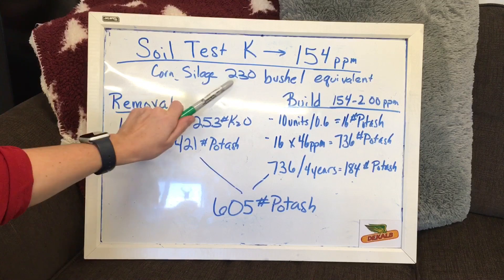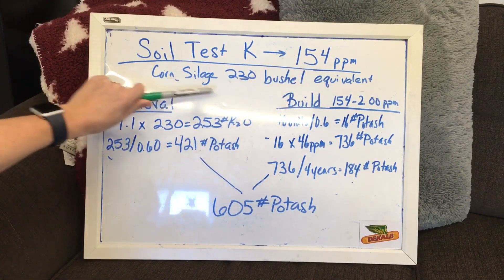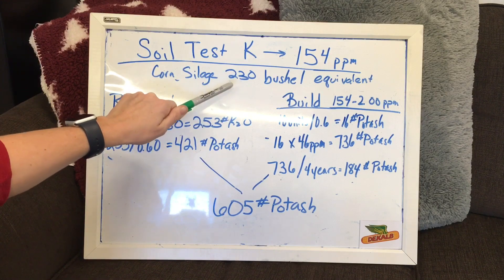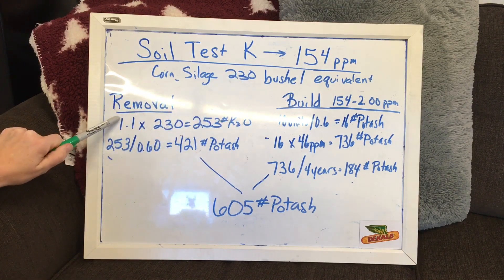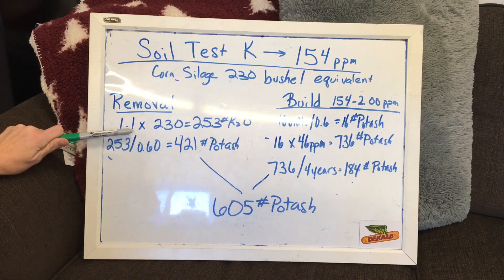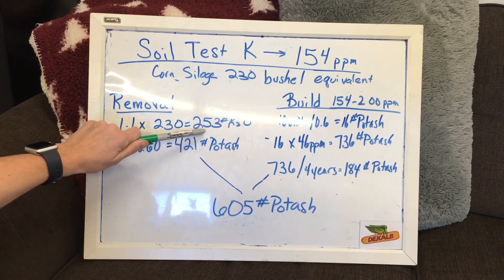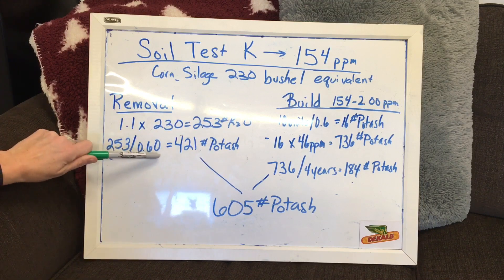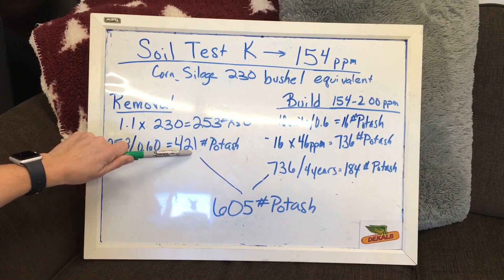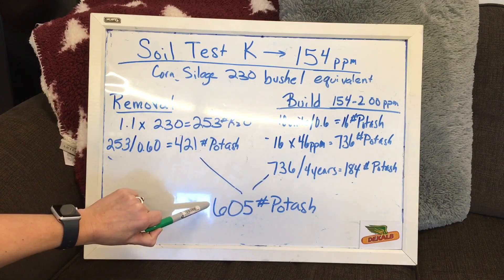When we look at silage, a 230-bushel equivalent crop is going to look like a 23-ton-per-acre removal. Potassium removal on a green crop is really high — we're looking at an equivalent of 1.1 units of K2O per bushel on 230, that's 253 pounds of K2O. Converted to potash, that's 421 pounds of potash to cover removal. Adding the build, that's 605 pounds of potash per acre per year.